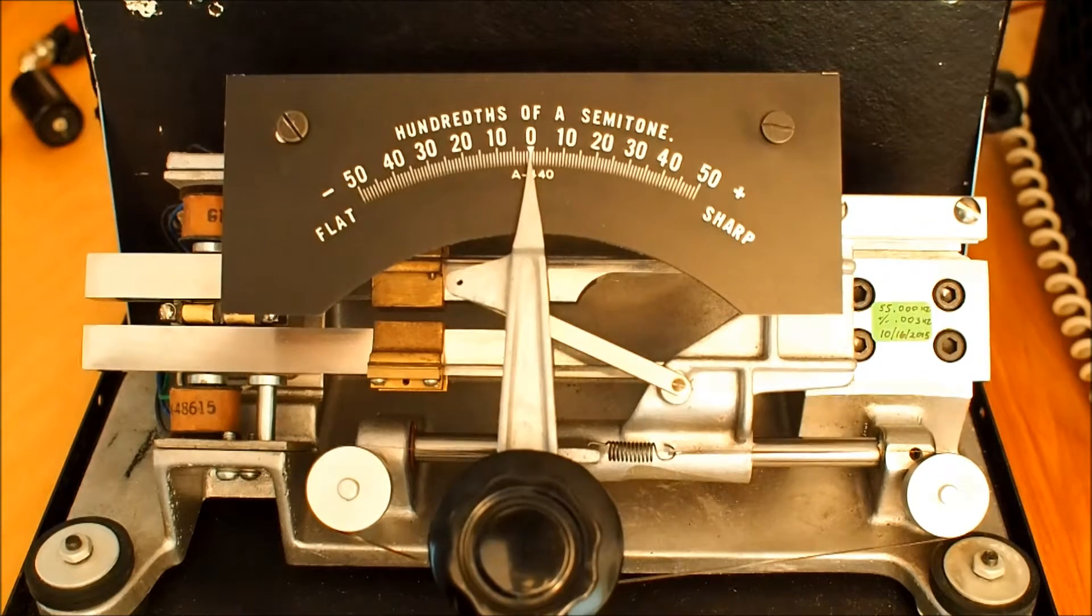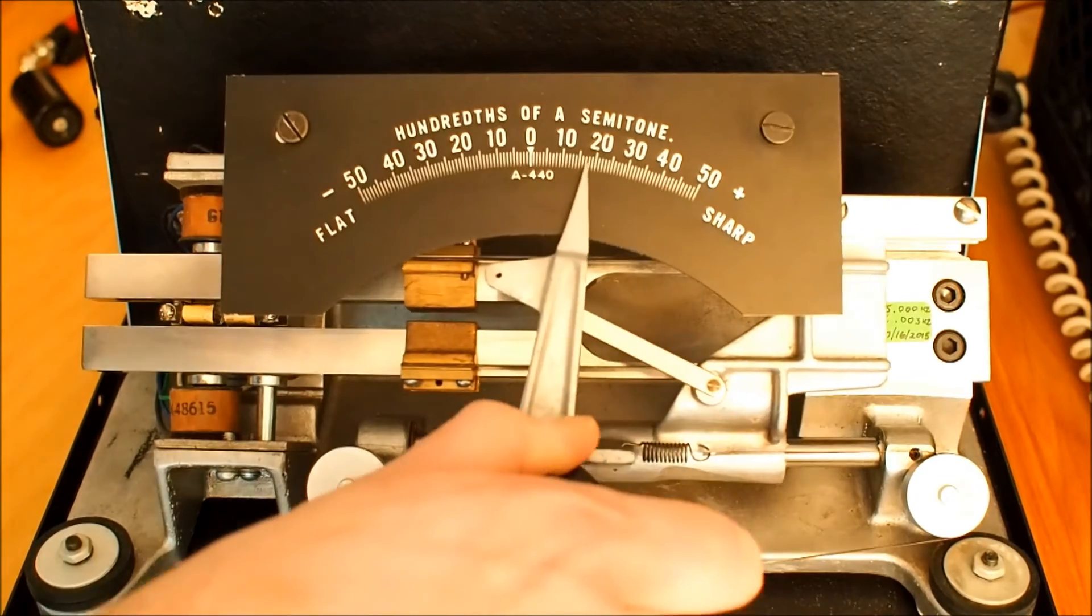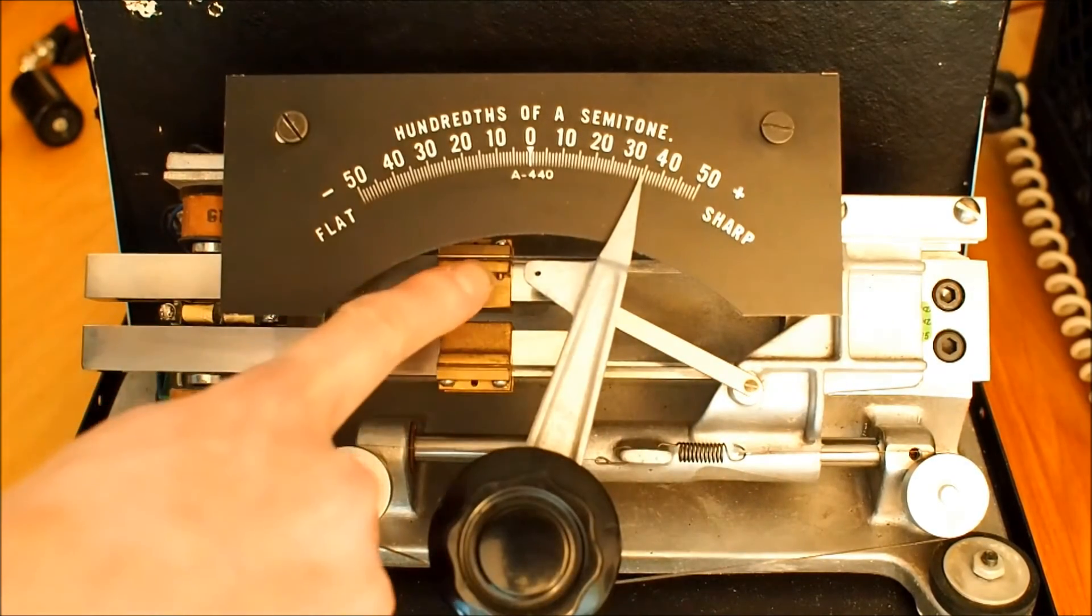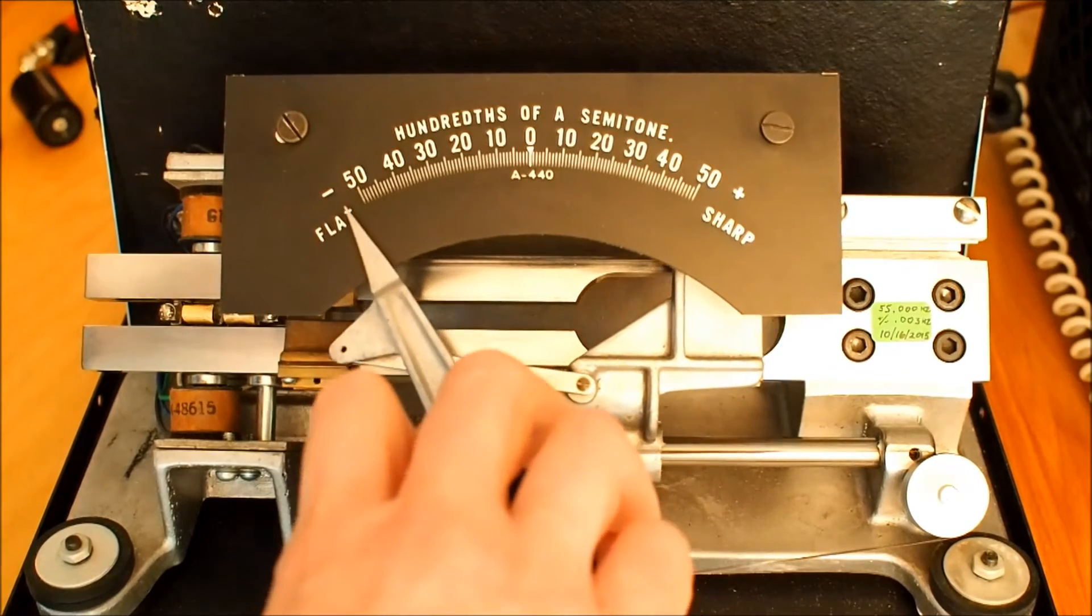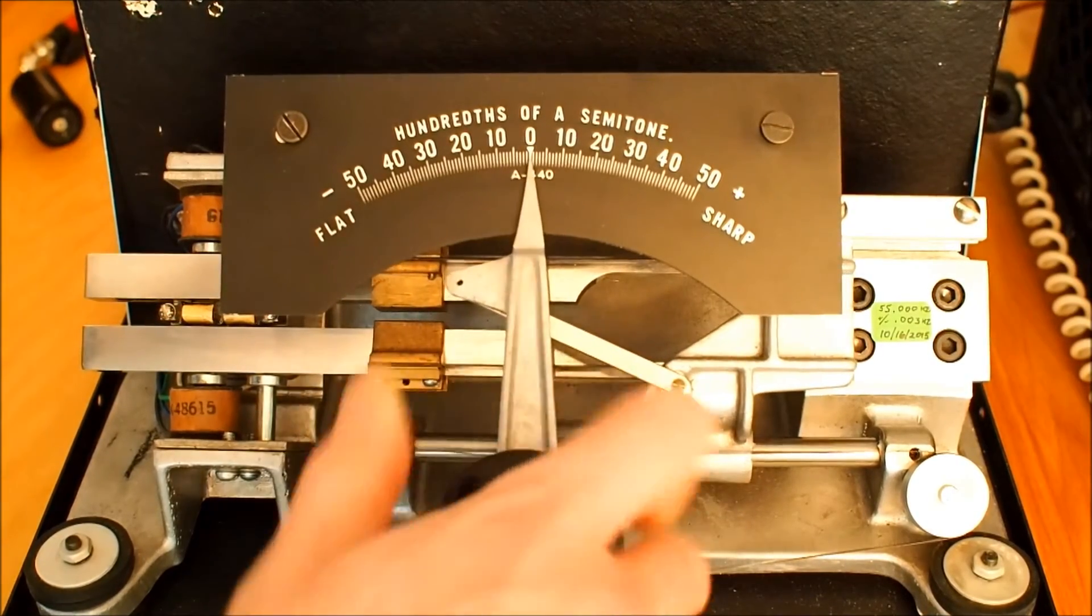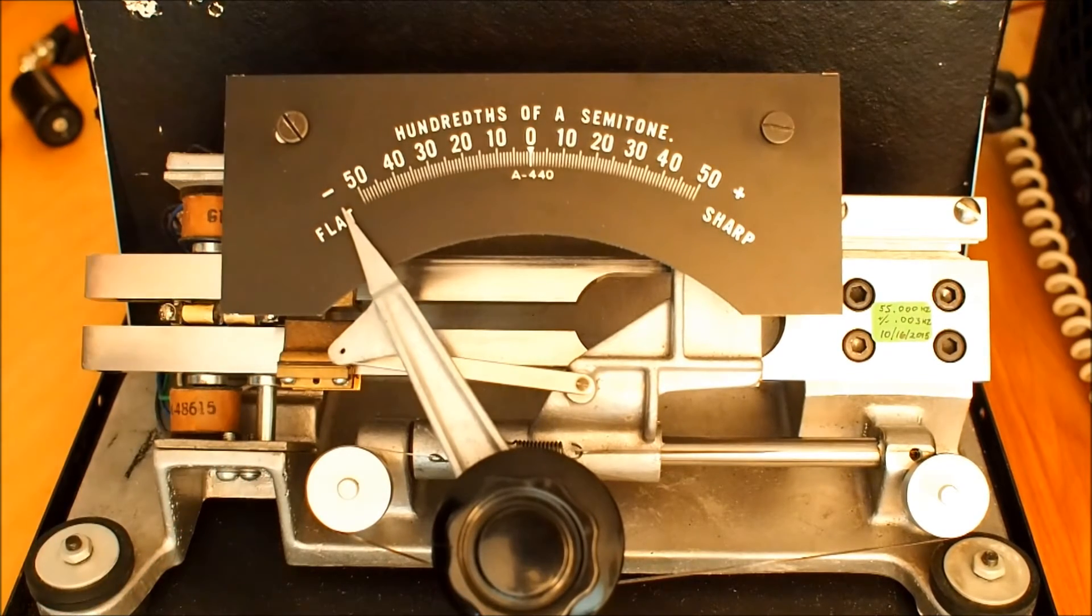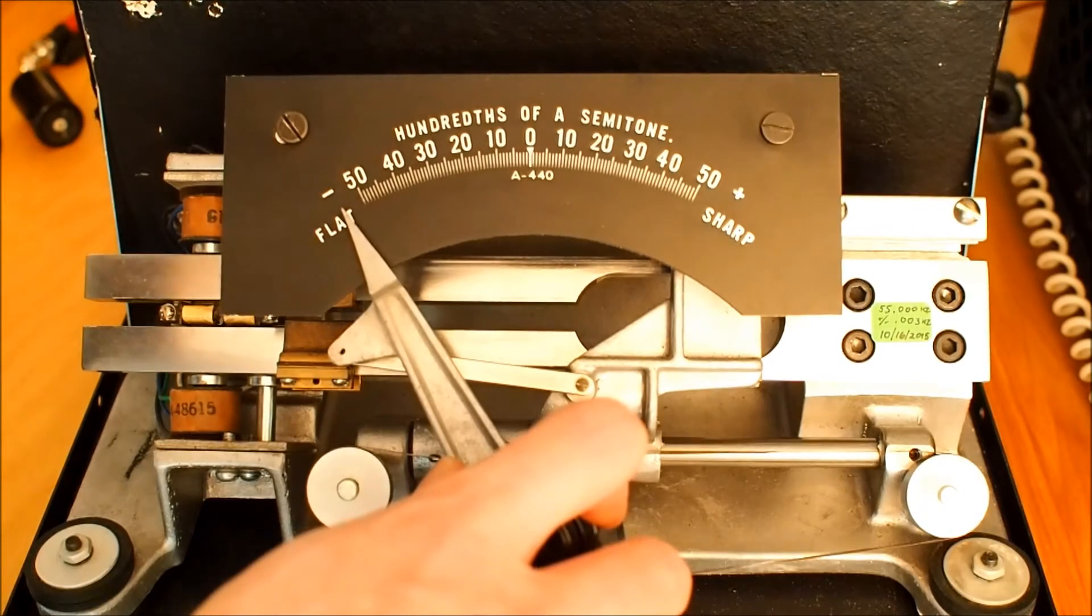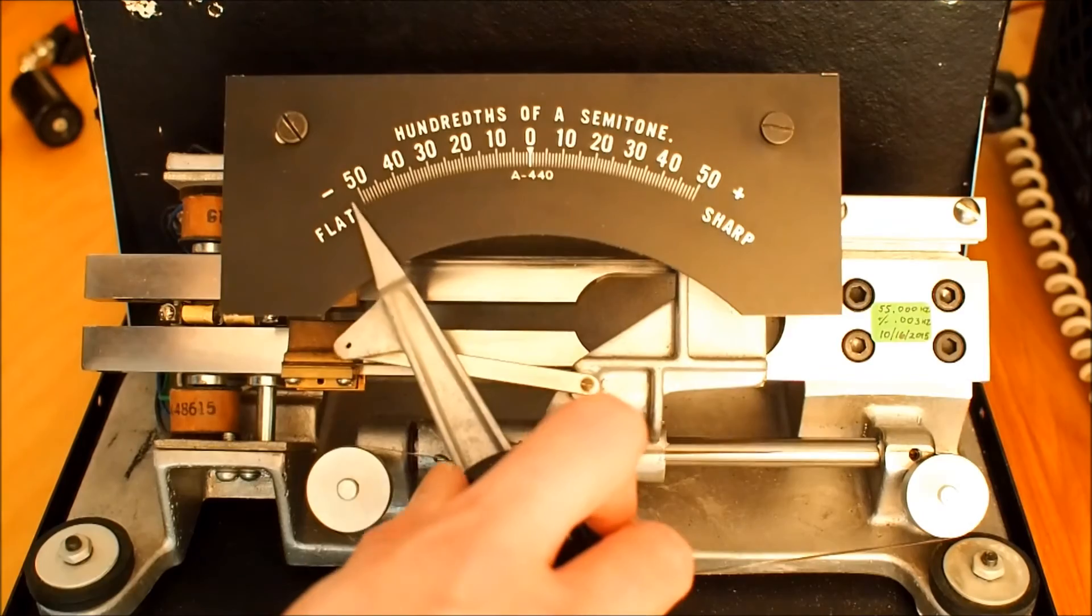The pitch adjustment here works by sliding these two weights up and down the length of the tuning fork. The further out you slide the weights, the more apparent mass moves towards the end of the fork and the pitch will lower.